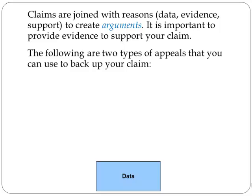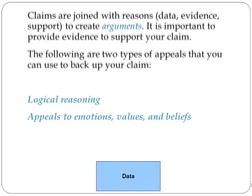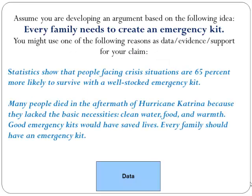It's important to provide evidence to support your claim. Two appeals you can use to back up your claim include logical reasoning and appeals to emotions, values, and beliefs. For example, developing an argument around 'every family needs to create an emergency kit,' you might use: statistics show that people facing crisis situations are 65 percent more likely to survive with a well-stocked emergency kit; or many people died in the aftermath of Hurricane Katrina because they lacked basic necessities — clean water, food, and warmth.